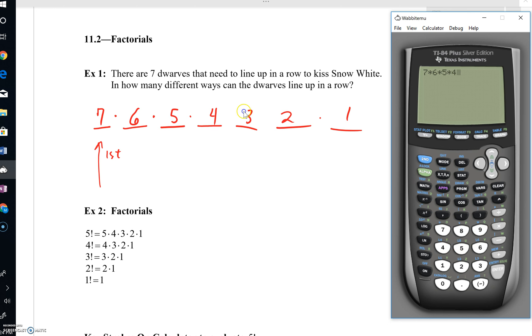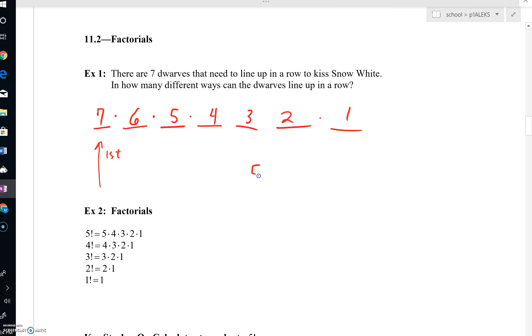Seven times six times five times four times three times two. You could even put in a times one if you'd like. And that's 5,040. 5,040 different ways that the dwarves could line up. This is where order matters. It really does matter who is standing first and so forth.